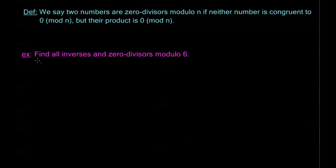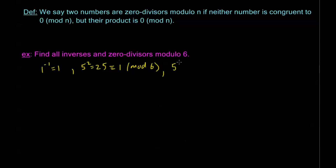Let's look at another example: find all inverses and zero divisors modulo 6. First, let's look at the inverses. I always have that 1-inverse equals 1. If I look at 5: 5 squared equals 25, and 6 times 4 is 24, so 25 is congruent to 1 mod 6. So 5 is its own inverse. But it turns out none of the others have inverses. Also, you can't have something have an inverse and be a zero divisor at the same time — we'll see that in a second.